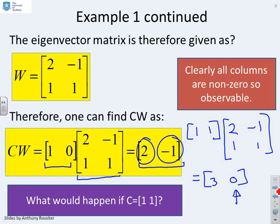The second column is now 0. So the system would be unobservable. And therefore, the choice of C is really important. If you get the choice of C wrong, your system can be unobservable.